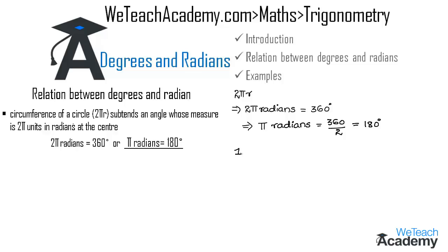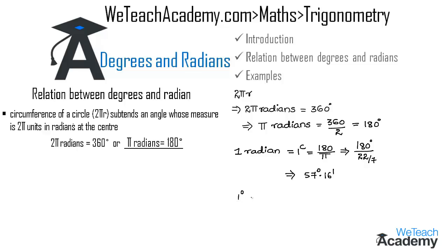The value of 1 radian, represented by 1c, equals 180 divided by π. Substituting the value of π as 22/7, we get 180 degrees divided by (22/7), which simplifies to approximately 57 degrees 16 minutes as the value of 1 radian. The value of 1 degree equals π radians divided by 180, which simplifies to approximately 0.01746 radians.